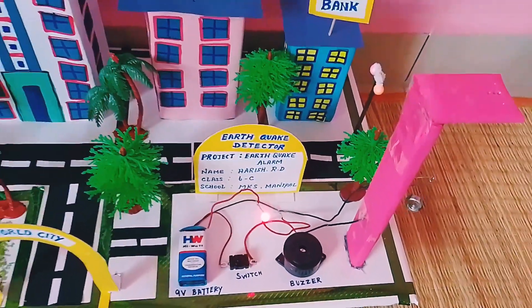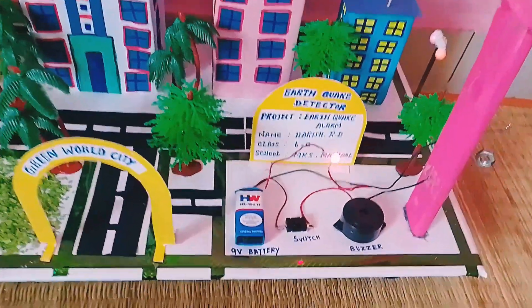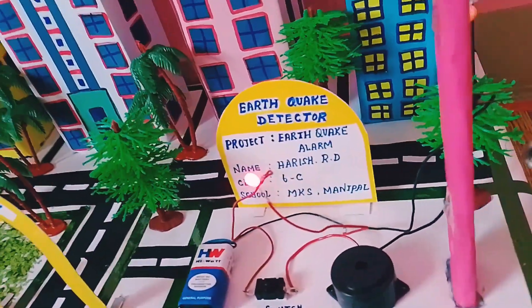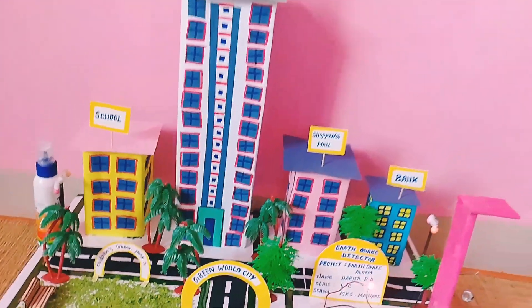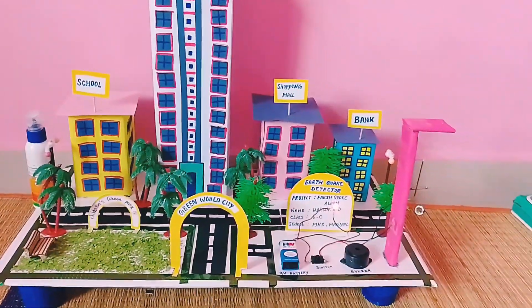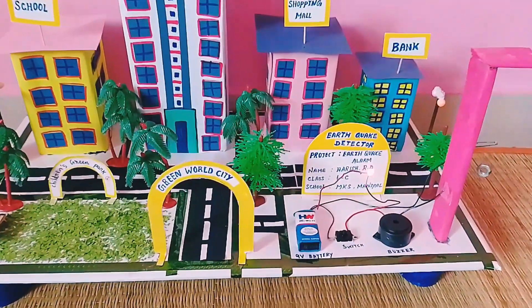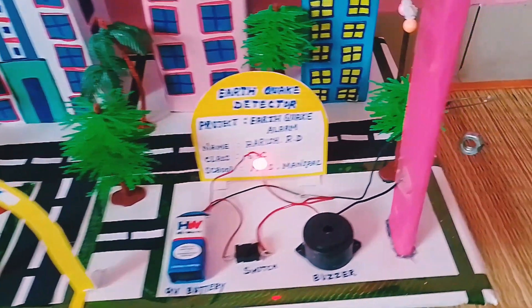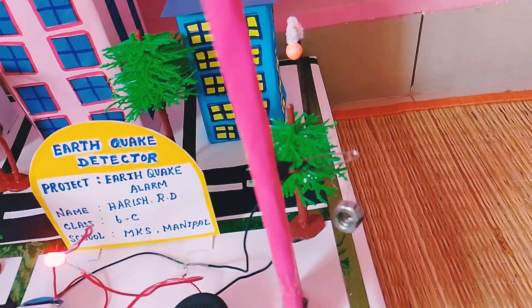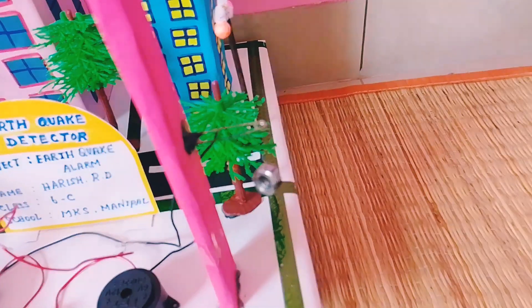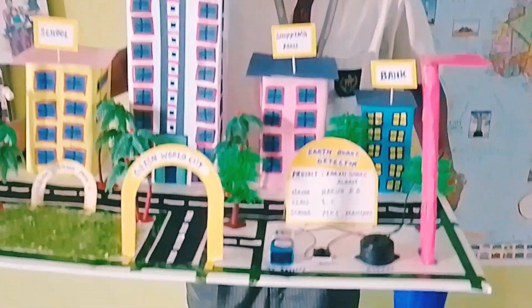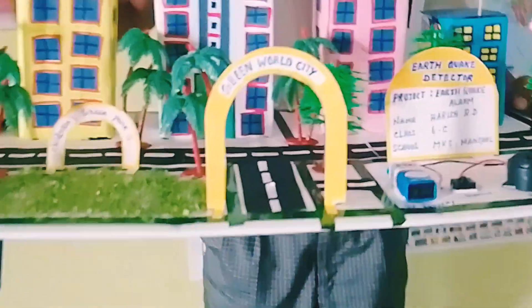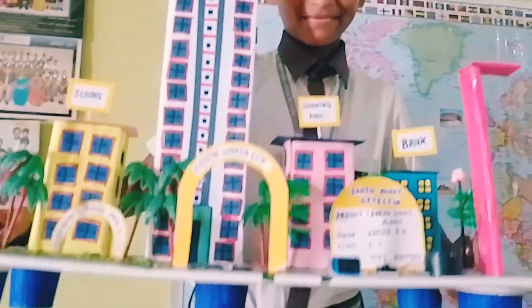If you want, you can arrange a light also, a red light that will come when shaking. You can use glue gun to stick the trees, buildings and all, because if you stick with Fevicol it may fall. For this project, I stuck a pink colored cardboard with the safety pin using glue gun. My project is successfully done.